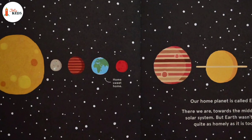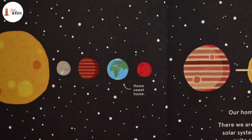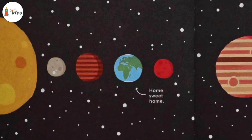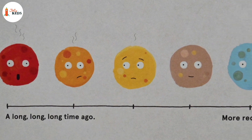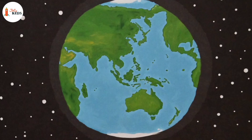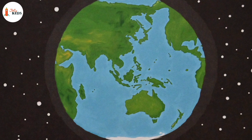Our home planet is called Earth. There we are, towards the middle of our solar system. But Earth wasn't always quite as homely as it is today. At first, it was pretty warm around here. But over time, the Earth began to cool. As our planet continued to cool, more and more of those particles were drawn together. More arrived from space, riding on meteors. Some eventually became the land and water on the Earth's surface.